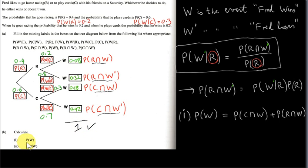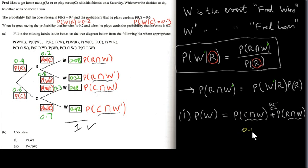For question 1, we want to find the probability that Fred wins. Fred can win in two ways: either he wins at cards or he wins at the races. These are the only two events for which Fred actually wins. To find the probability that he wins at cards or wins at races, we sum the probabilities. P(C∩W) = 0.18 and P(R∩W) = 0.08, so P(W) = 0.18 + 0.08 = 0.26.